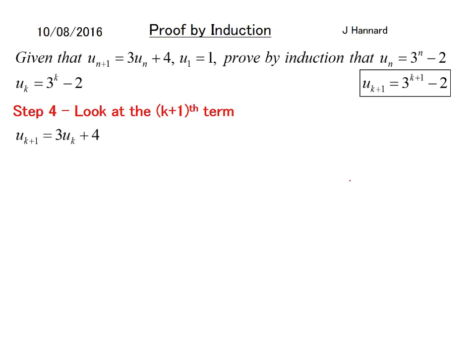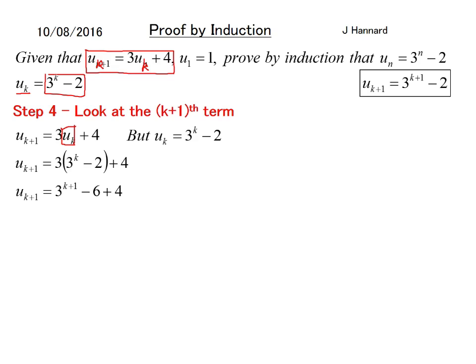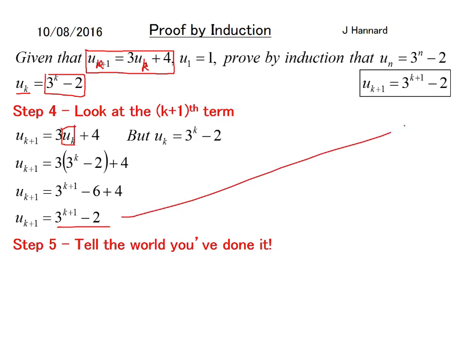Look at the k plus 1's term. Well we are given the generator for a u_(k+1) because if we think about that as k plus 1 then that must be a k here and we know what a u_k is because we've made our inductive hypothesis. So we can replace this u_k with 3^k - 2. So we do that, therefore u_(k+1) equals 3^(k+1) - 6 + 4, just expanding. So therefore u_(k+1) equals 3^(k+1) - 2 and that means we've met our target.